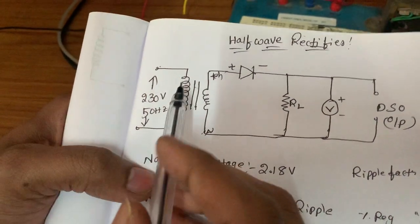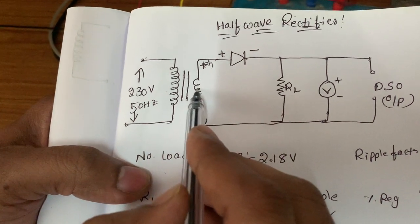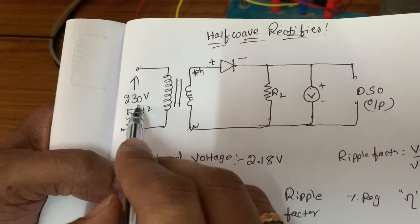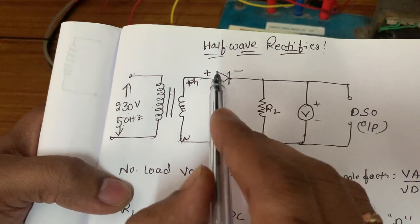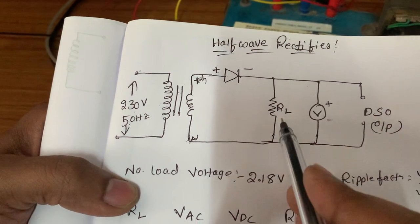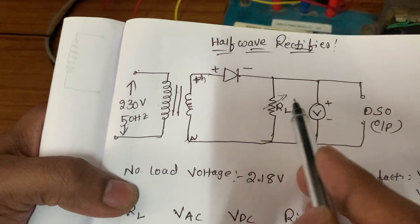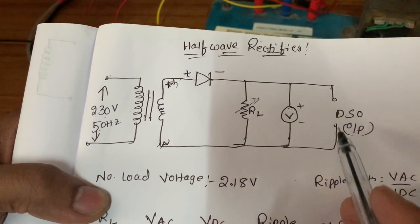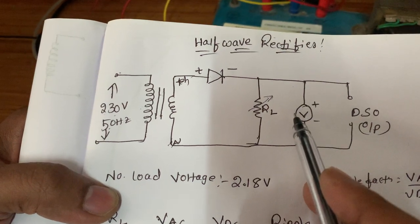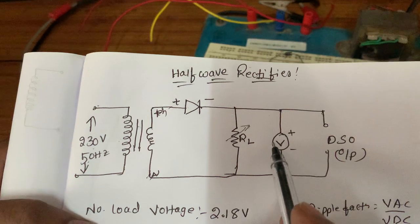Looking at the diagram, this is called a transformer — we are using a step-down transformer here. A step-down transformer is used to decrease the voltage. We are giving the AC input supply voltage, and it passes through a P-N junction diode. Here we are connecting a load resistance, and we will vary the load resistance. By varying the load resistance, we will find out the AC voltage as well as the DC voltage at the output stage, and from those we will find out the ripple factor.